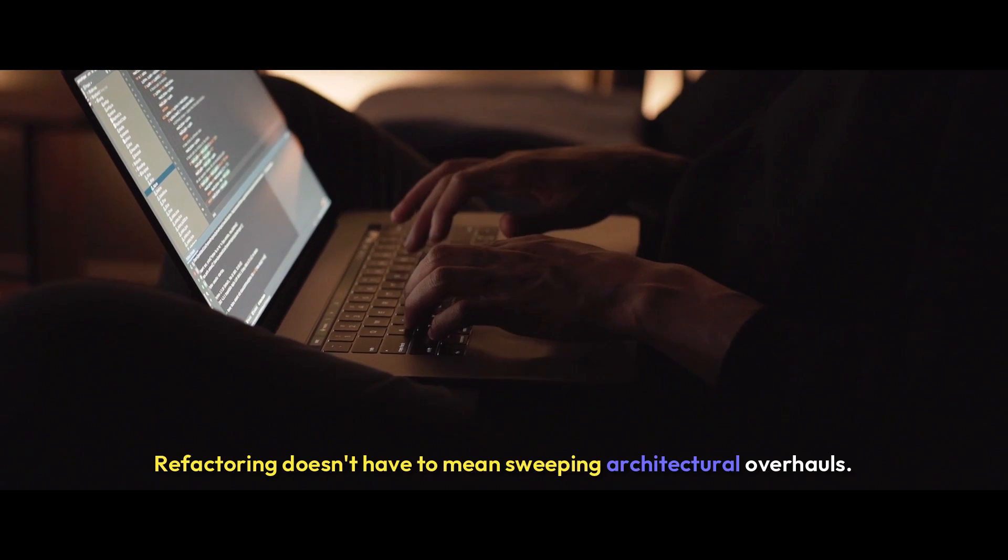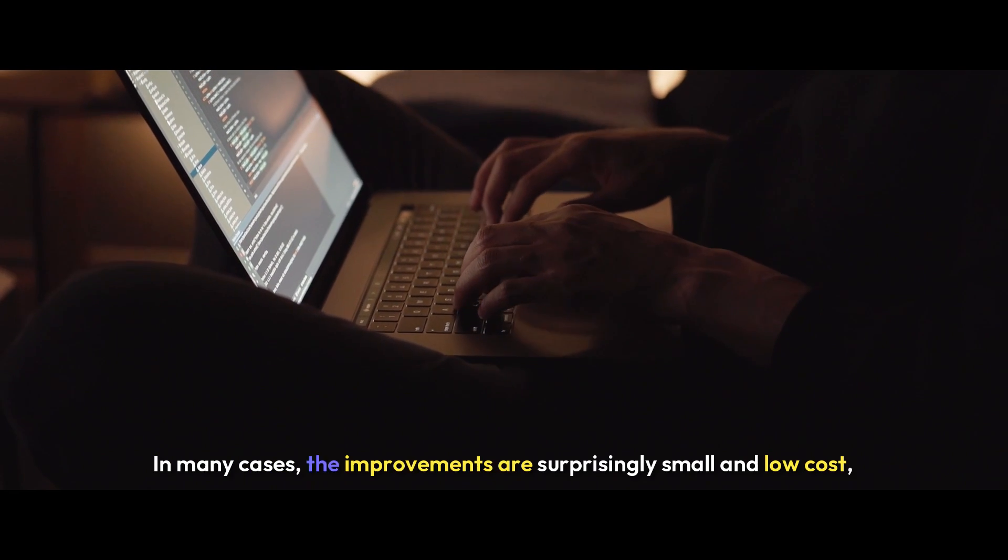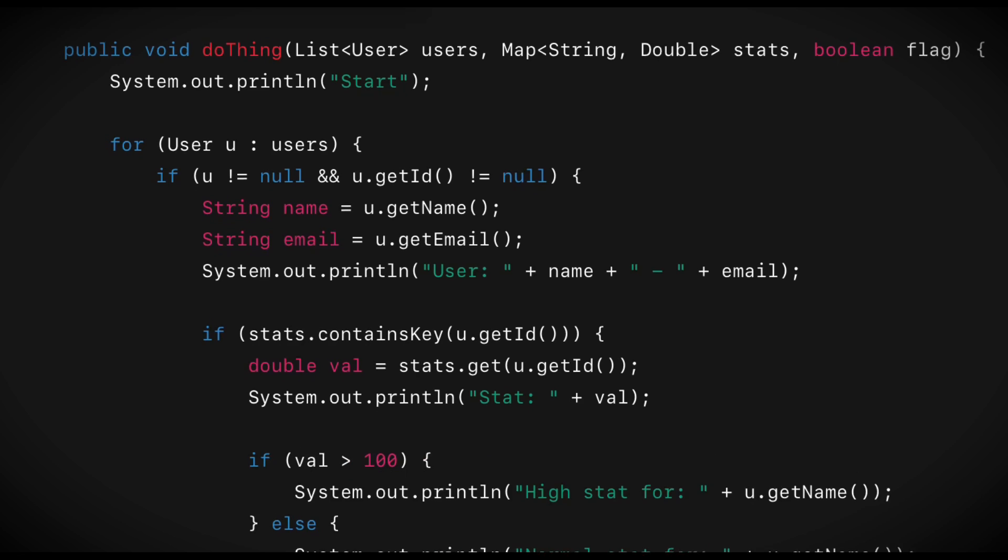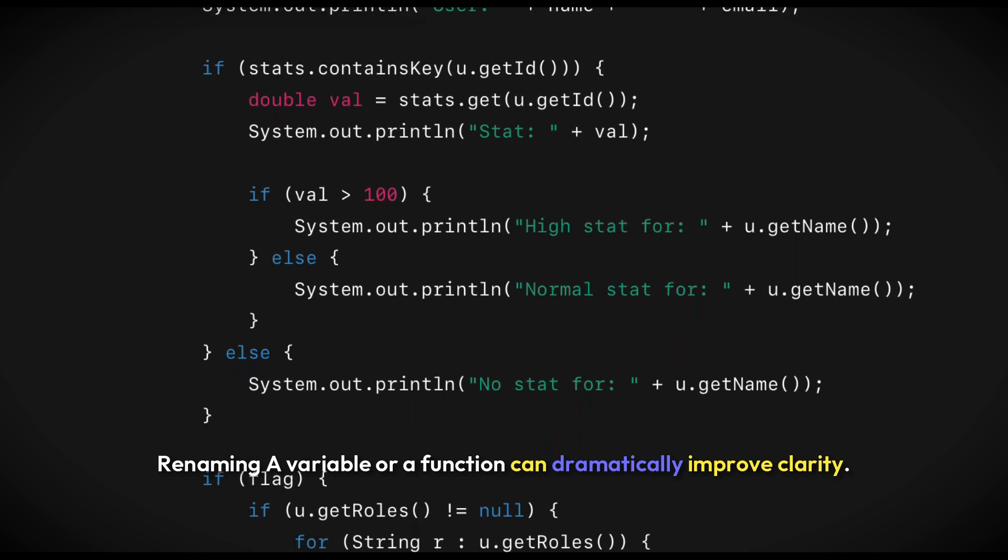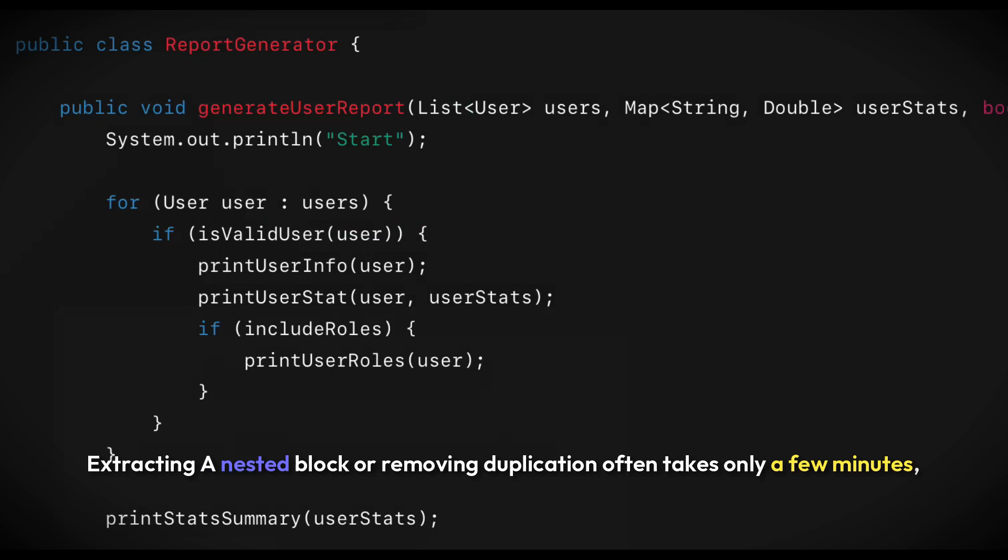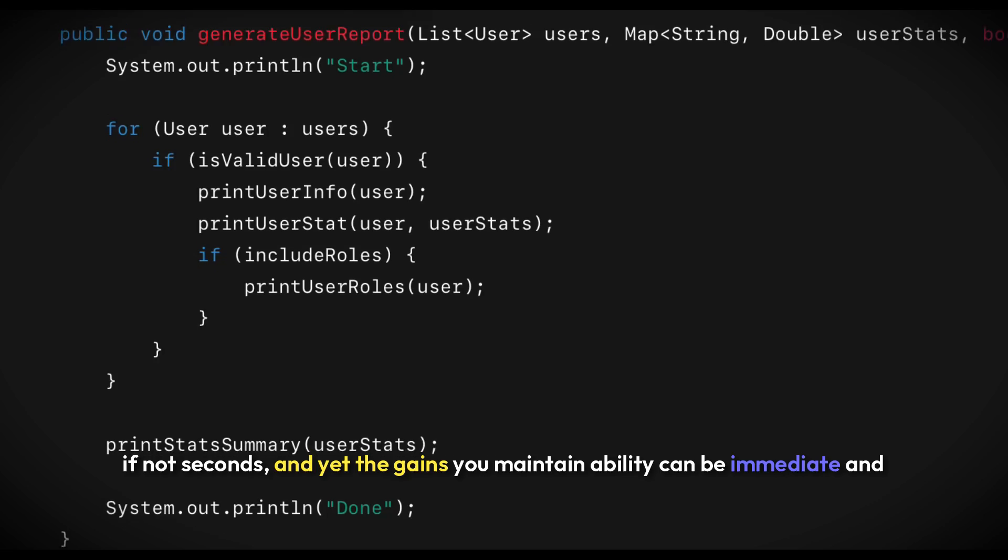Refactoring doesn't have to mean sweeping architectural overhauls. In many cases, the improvements are surprisingly small and low-cost, and yet they deliver outsized benefits. Renaming a variable or function can dramatically improve clarity. Extracting a nested block or removing duplication often takes only a few minutes, if not seconds, and yet the gains in maintainability can be immediate and significant.